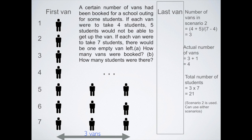Using scenario two, we know that three vans and seven students. So total number of students would be 21. Let's check our answer. In scenario one, four vans times four students plus five, five could not get up. So we have the same answer, 21.